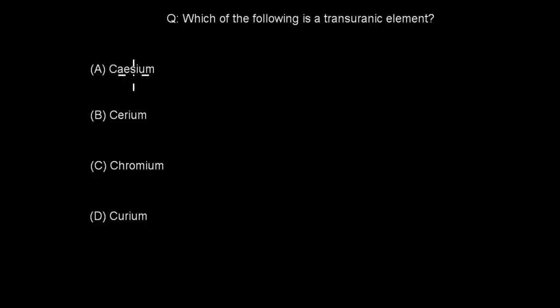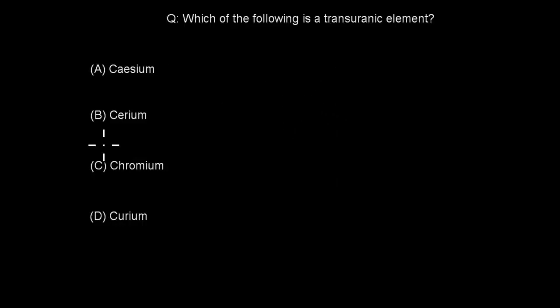So the first question: which of the following is a transuranic element? A. Cesium, B. Cerium, C. Chromium, D. Curium. For this question, I'll give you a tip — you should be using your periodic table. In the actual exam, you'll also be given a periodic table. Have a look and see if you can figure out which one is the transuranic element.